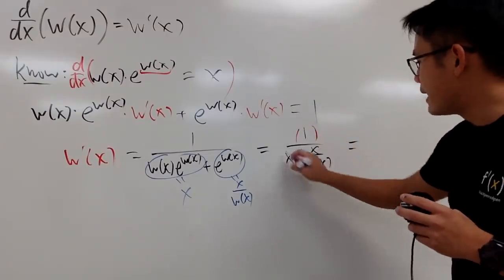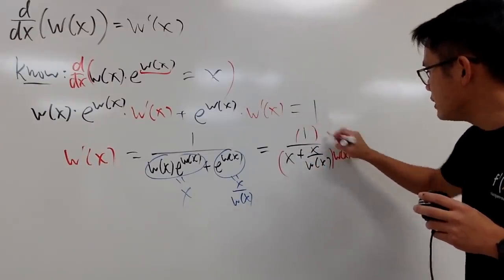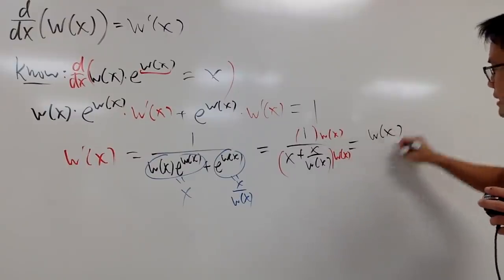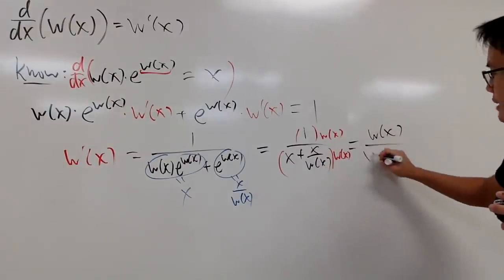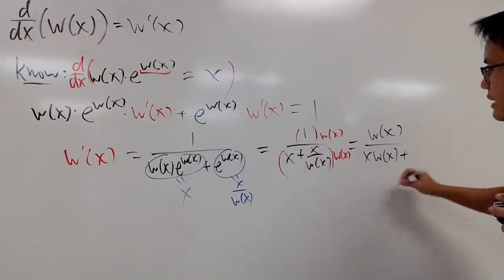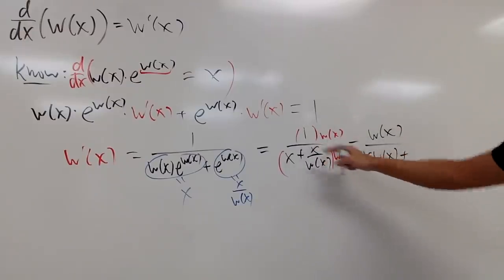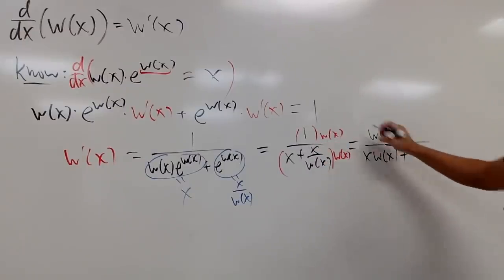Let's multiply the top and bottom by W of x. So you see that on the top, we actually just have W of x on the bottom. This times that, we have x times W of x, and then we add this with, this times that cancel, of course. So you have just x right here. And with that, we are done.